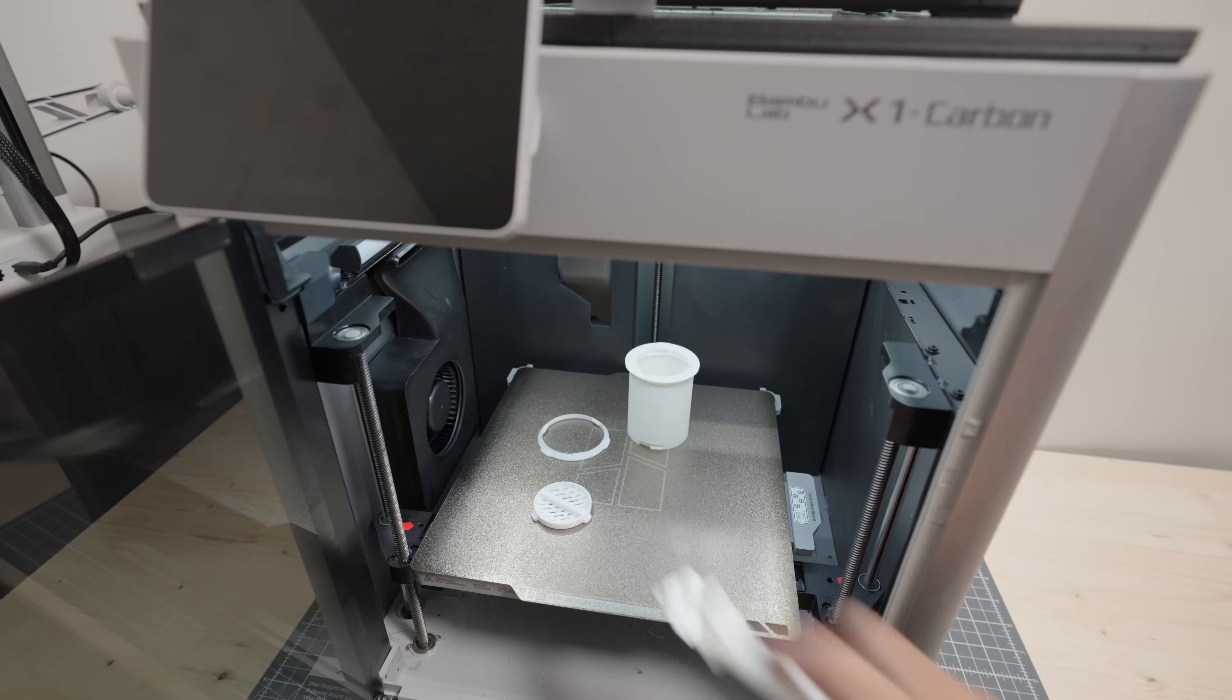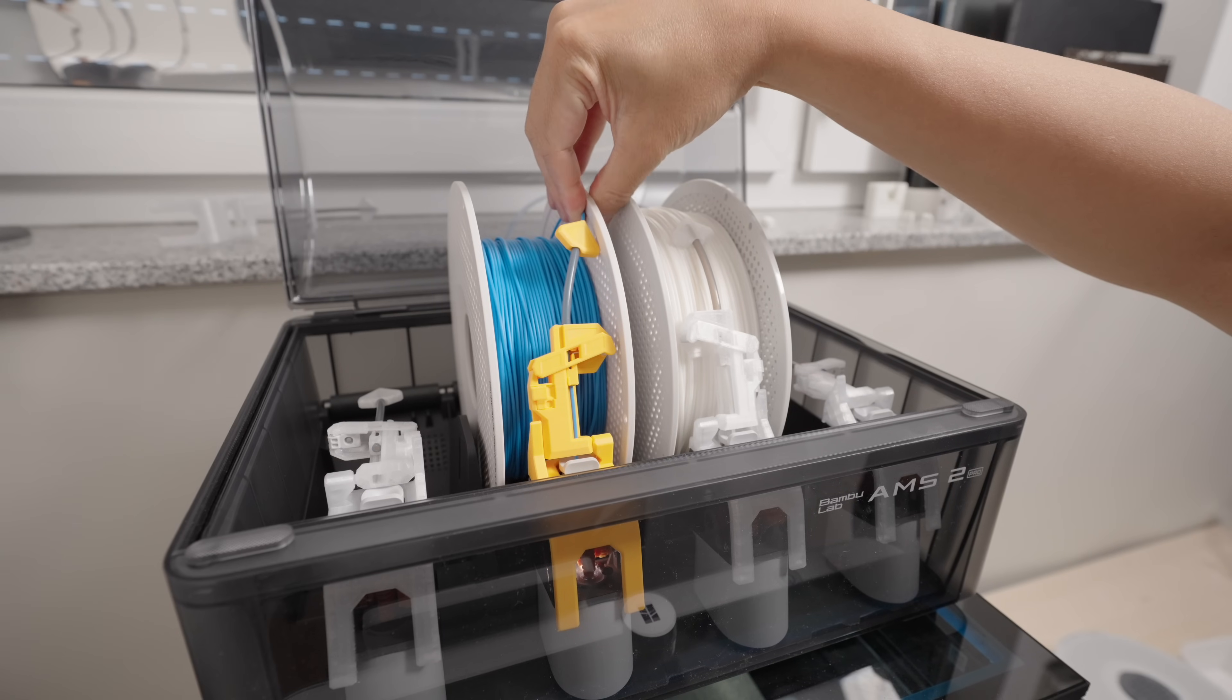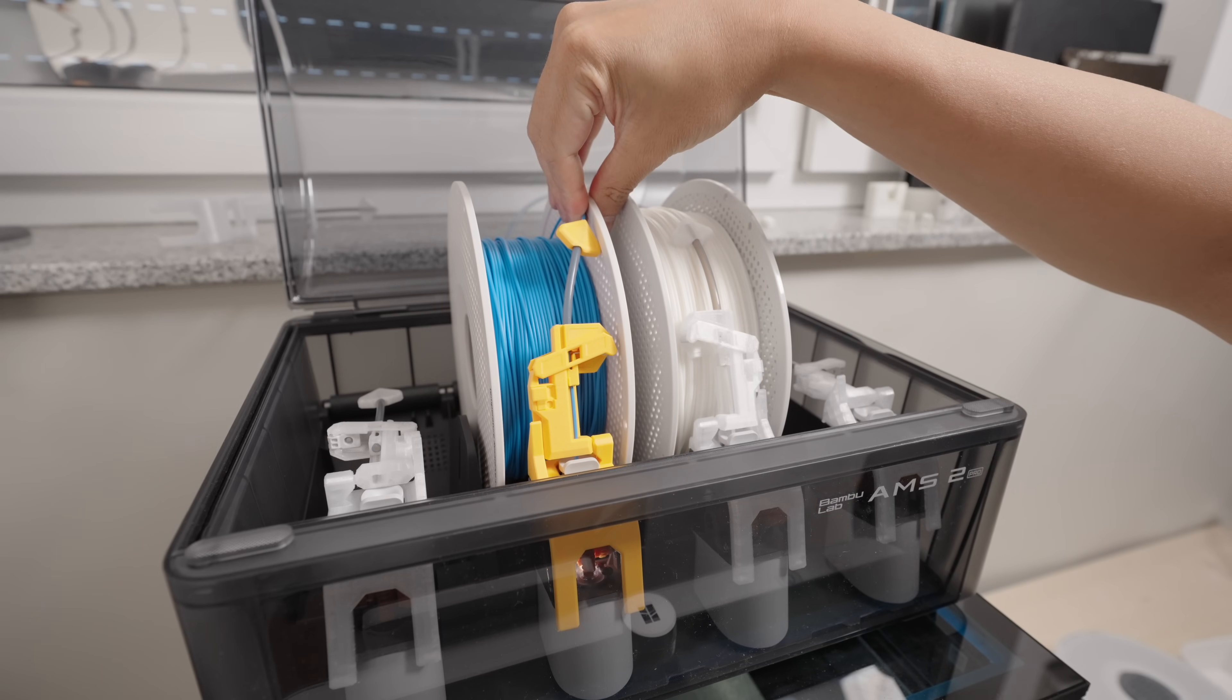Of course the same scenario applies if the filament is getting tangled. Now I don't have a tangled spool so I'm gonna simulate it by holding the filament down and that should trigger the snack cutter to cut the filament.